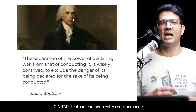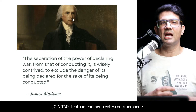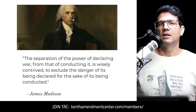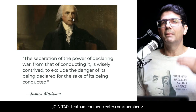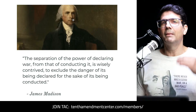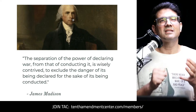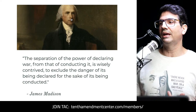They knew throughout history that the executive branch — whatever form of government — was the most prone to war and most likely to drag a country into it. Here's John Jay, first chief justice of the United States, in Federalist No. 4: 'It is too true, however disgraceful it may be to human nature, that nations in general will make war whenever they have a prospect of getting anything by it. Nay, absolute monarchs will often make war when their nations are to get nothing by it — for purposes merely personal, such as thirst for military glory, revenge for personal affronts, ambition, or private compacts to aggrandize their particular families or partisans.'